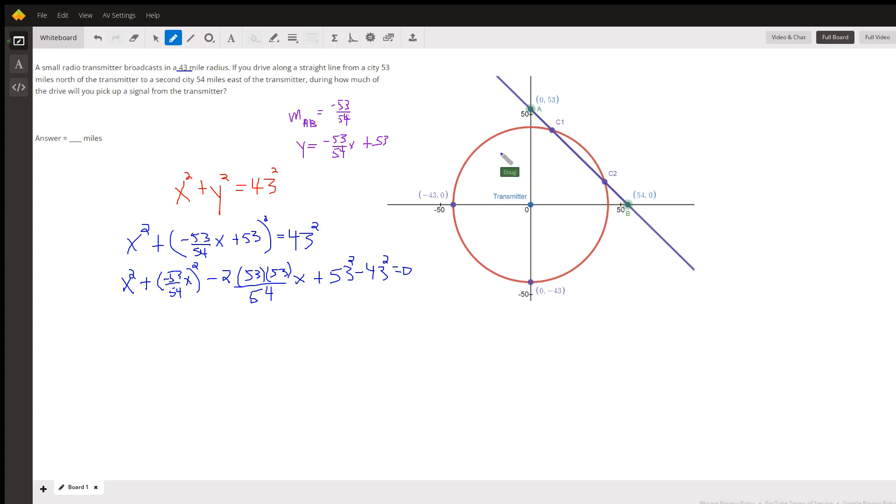If you wanted a percentage of the time, assuming that he drove at a constant rate, you'd find the distance from C1 to C2 and put it over the distance from A to B.